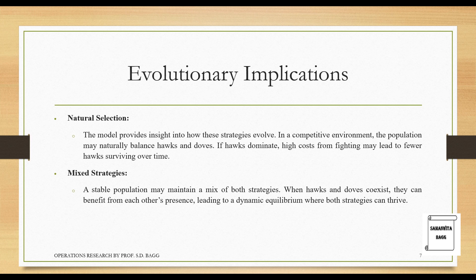Evolutionary implications — natural selection: the model provides insights on how these strategies evolve. In a competitive environment, the population may naturally balance Hawks and Doves. If Hawks dominate, high costs from fighting may lead to fewer Hawks surviving over time. It is a theory of evolution — whoever is stronger will survive, but if the stronger ones keep fighting each other, the number of Hawks will reduce over time and Doves will survive and increase in number.